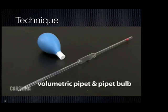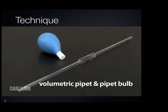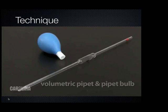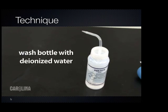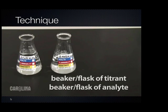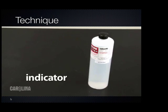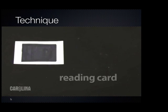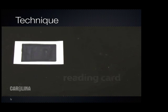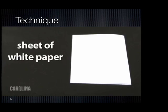A volumetric pipette and pipette bulb to transfer a known volume of analyte to the flask. A wash bottle filled with deionized water. A beaker or flask of titrant and of analyte. Indicators selected for your reaction. A reading card to help read the meniscus. And a sheet of white paper to help visualize the endpoint.